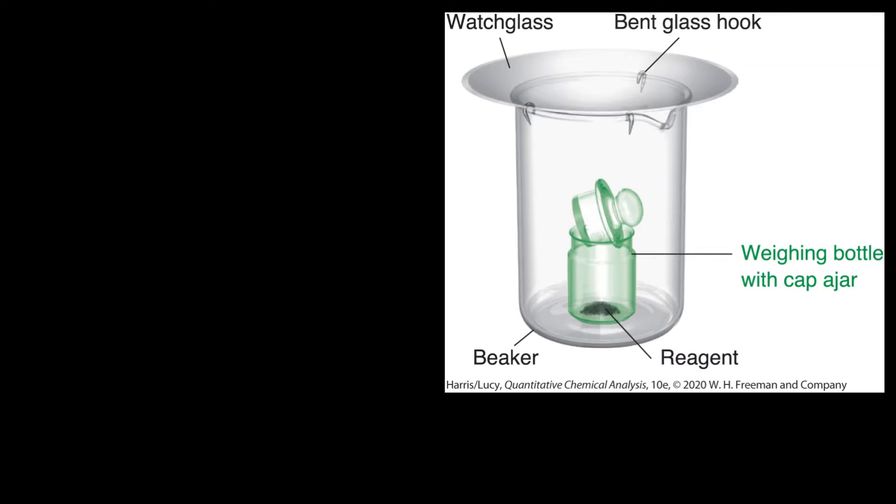Here's the weighing bottle with the substance we want to dry, and here's the lid. We can place a watch glass over the surface of the beaker to prevent any dust from coming in, and we can place it in an oven.